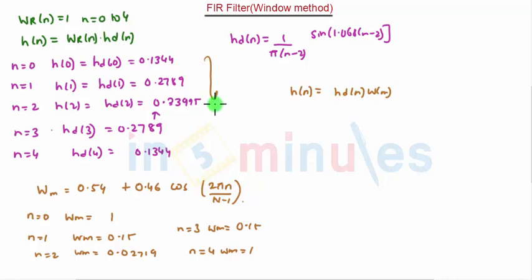Now we have already calculated these values. We are going to multiply these values. So the final answer would be H of n for different values of n, that would be n is equal to 0 to 4. So when n is equal to 0, the first value would be 0.1344. The second one is 0.15. When n is equal to 2, it would be 0.02719.